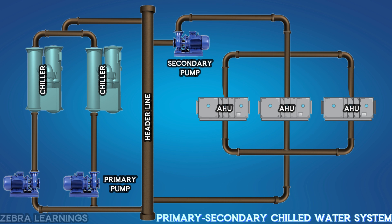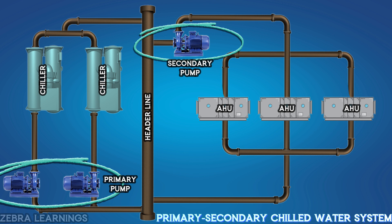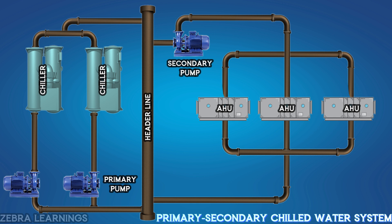Now let's talk about the primary secondary chilled water system. In a primary secondary chilled water system, two pumps are used to circulate water — one is the primary pump and the other is the secondary pump. This system is used in large buildings because the water has to be transported over a long distance.